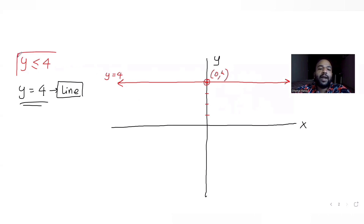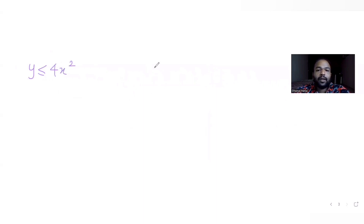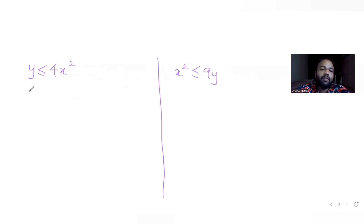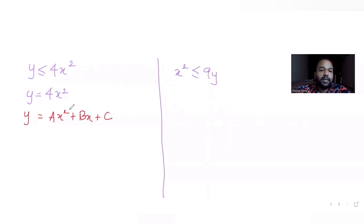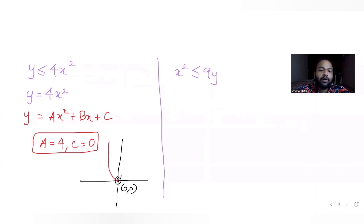Since y is less than or equal to 4, the entire region lies below this line. Now let's also plot the other two regions. For y ≤ 4x², removing the inequality gives y = 4x². Comparing with y = ax² + bx + c, I get a = 4 and c = 0, so the parabola intersects the y-axis at the origin and opens upward since a is positive.